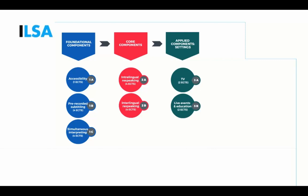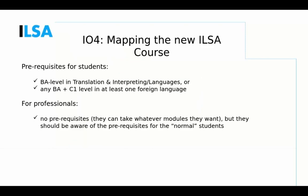Offering access to media and live events through interlingual live subtitling is only one facet of accessibility, and this is something students must be aware of. To be allowed to take the core components — intralingual re-speaking and interlingual re-speaking — students must have acquired the knowledge and skills from the three foundational components, either through the modules suggested in our course or through an existing course from their master program.